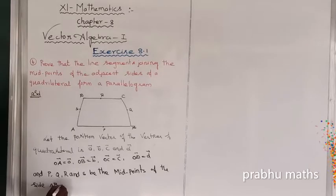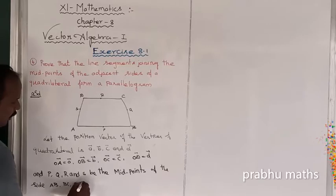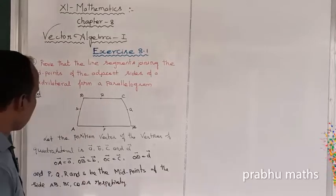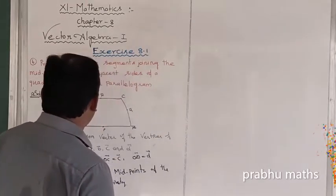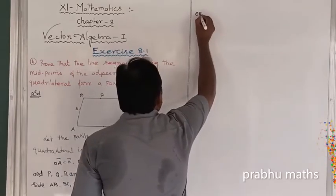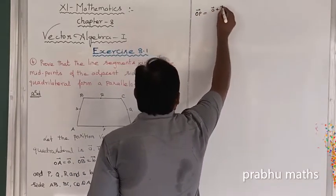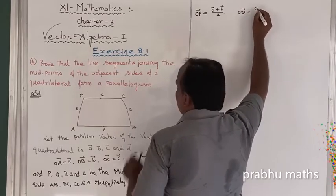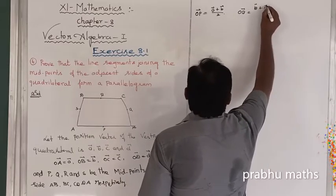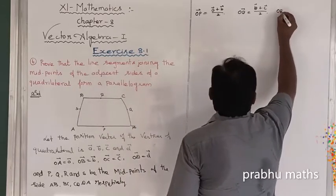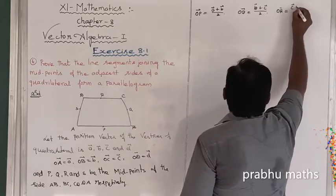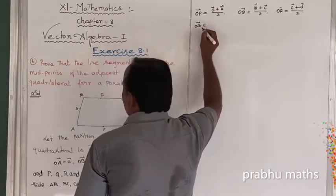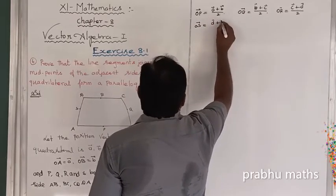The midpoints are on sides AB, BC, CD, and DA. So OP vector equals (A vector + B vector) / 2. OQ vector equals (B vector + C vector) / 2. OR vector equals (C vector + D vector) / 2. OS vector equals (D vector + A vector) / 2.